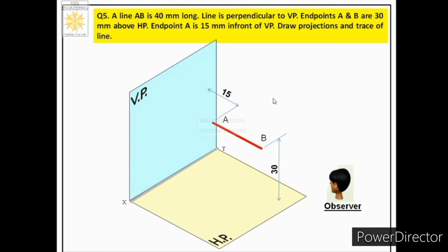We are discussing the case in which the line is perpendicular to VP and parallel to HP. If the line is perpendicular to VP, then its projection on that plane will be a point. And since the line is parallel to HP, its projection on HP will be a straight line of true length.